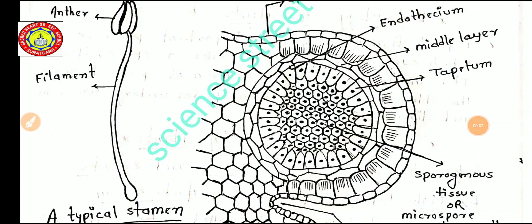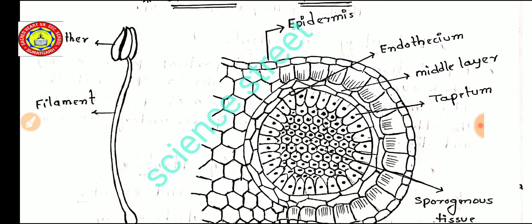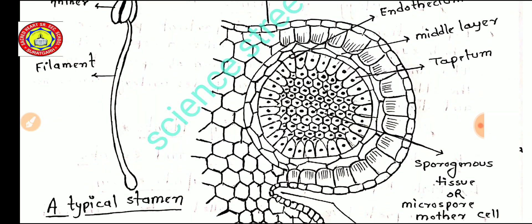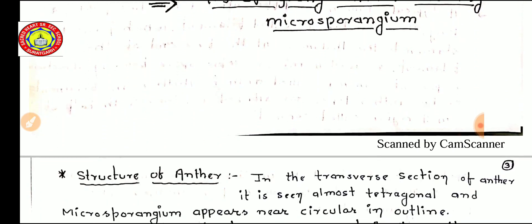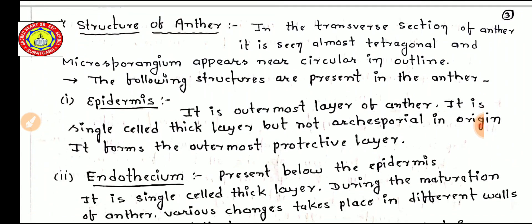Hello students. In the last two videos we studied about sexual reproduction in flowering plants. In the last video we observed the structure of the microsporangium — epidermis, endothesium, middle layer, and tapetum. Now we will study all these things one by one briefly. Let us start with the structure of the anther.